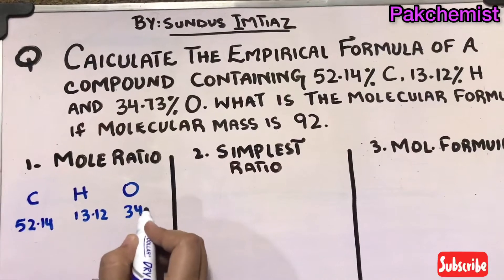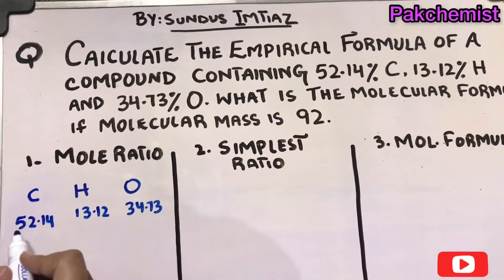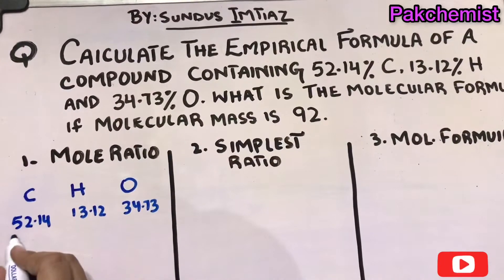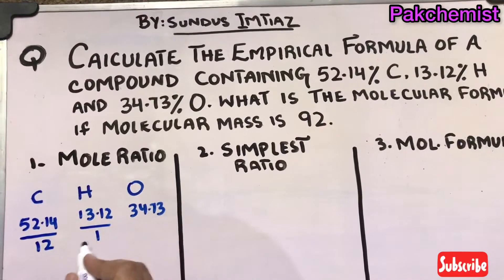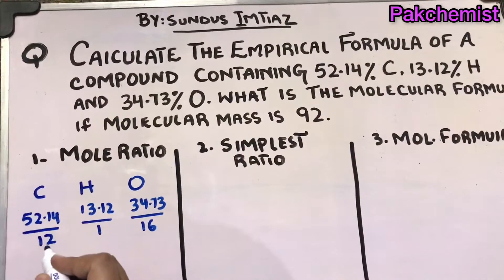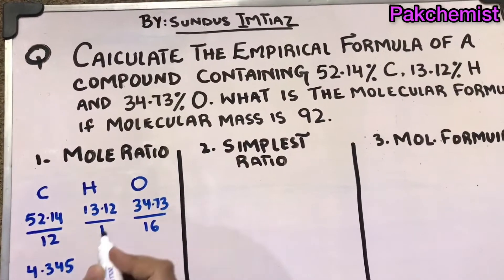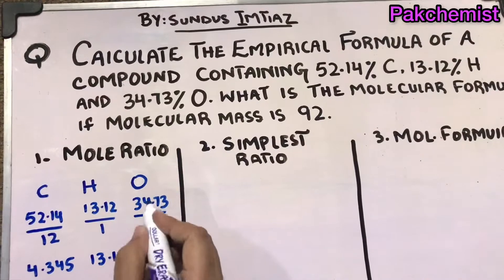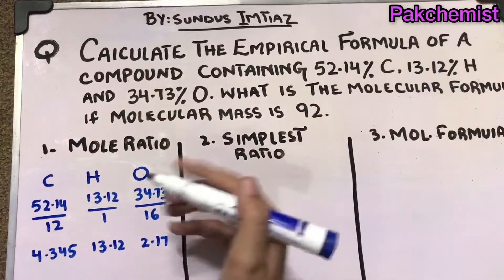Now you have to divide these percentages with the atomic masses that are constant and given in the periodic table. Carbon has atomic mass 12, hydrogen has 1, oxygen has 16. After dividing 52.14 by 12 you will get 4.345. After dividing you will get 13.12, and after dividing you will get 2.17. This is our second step.